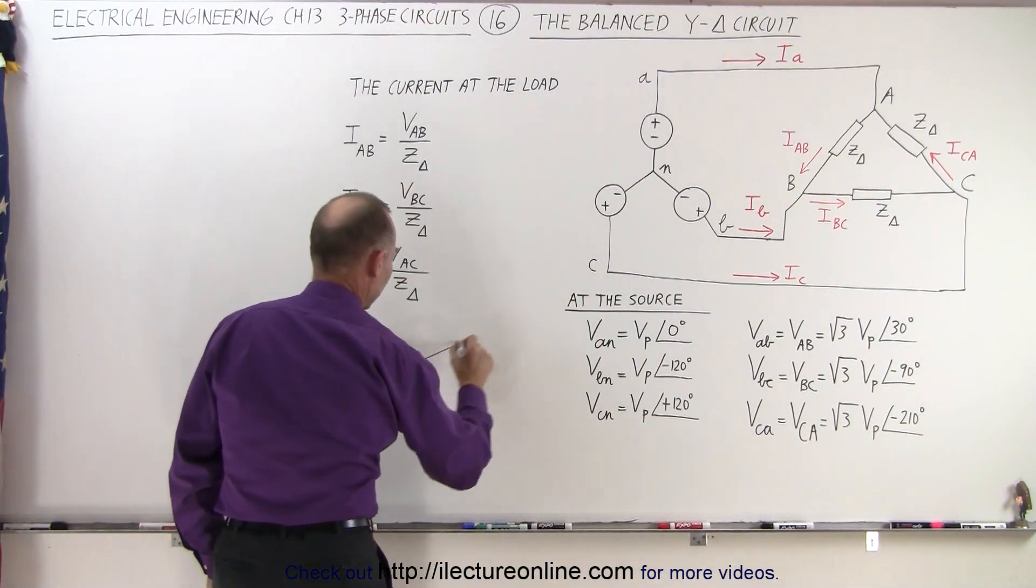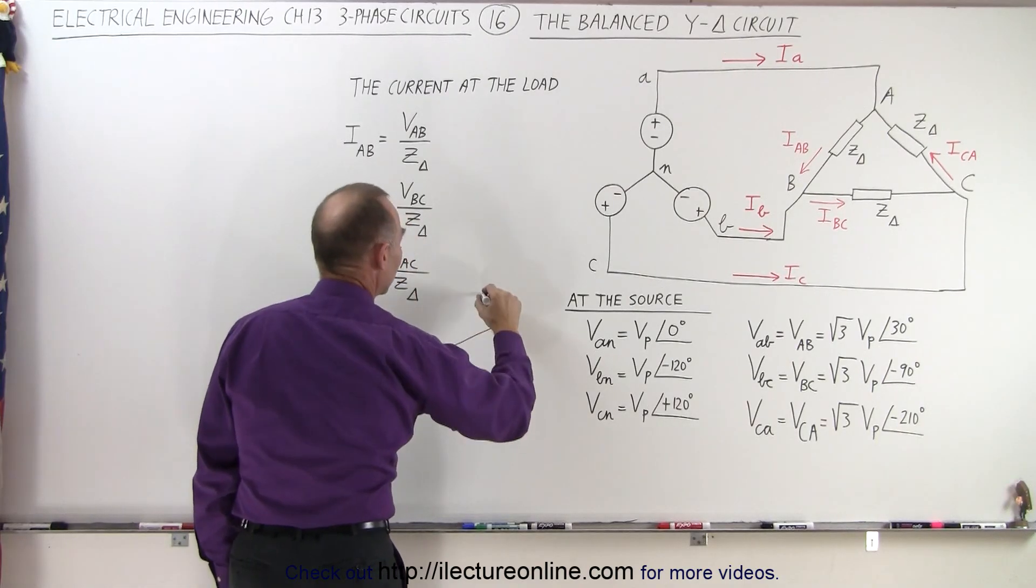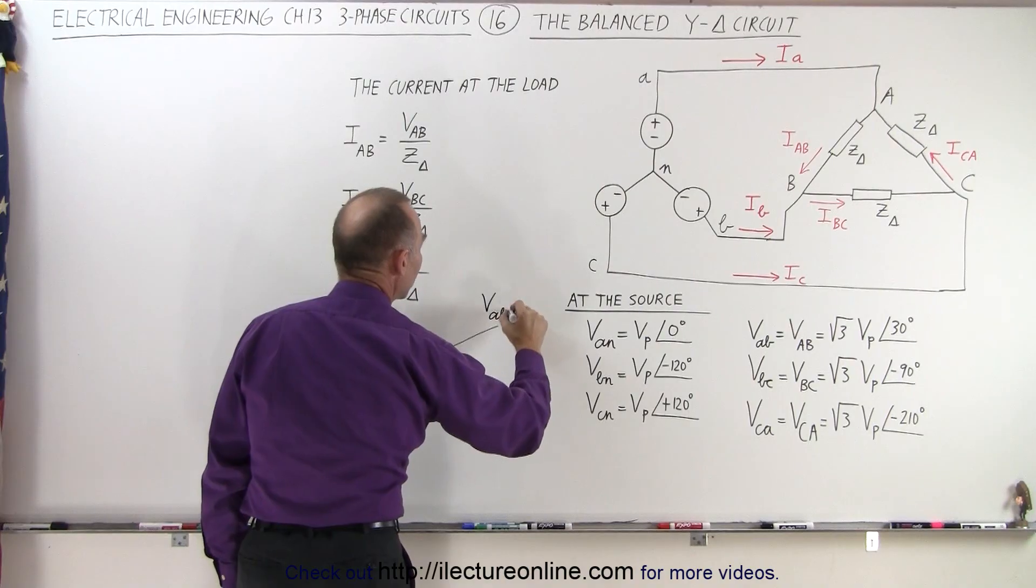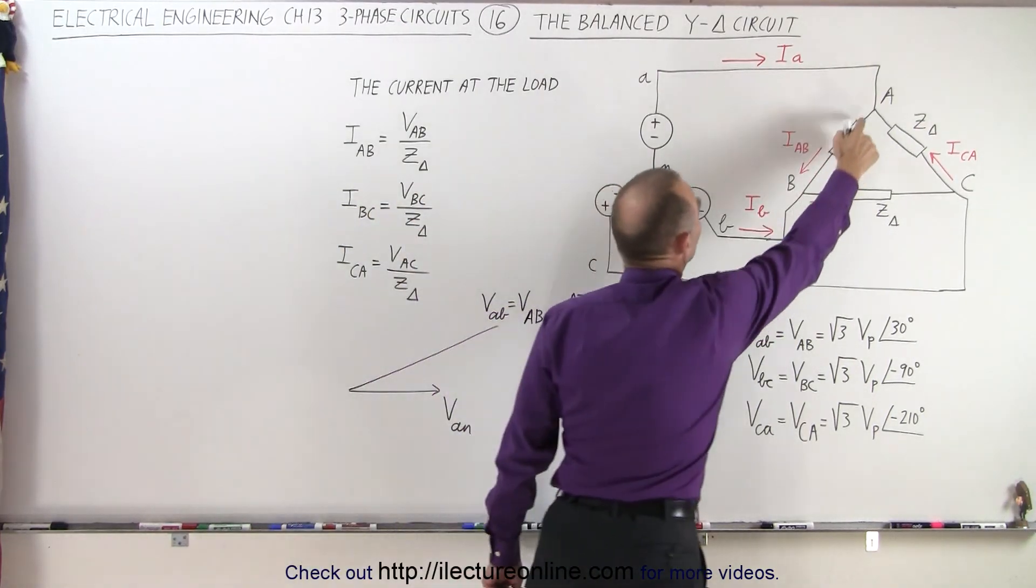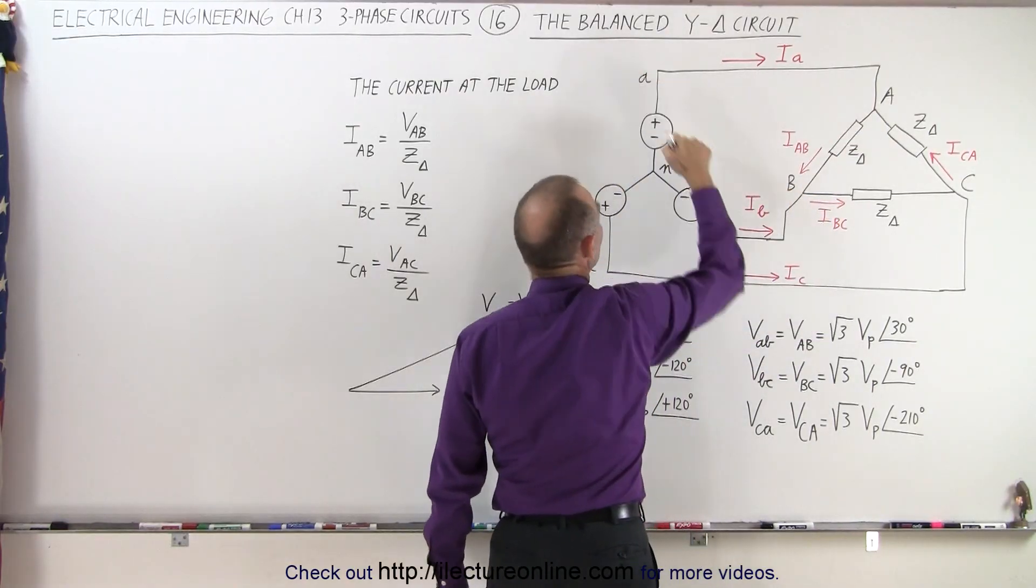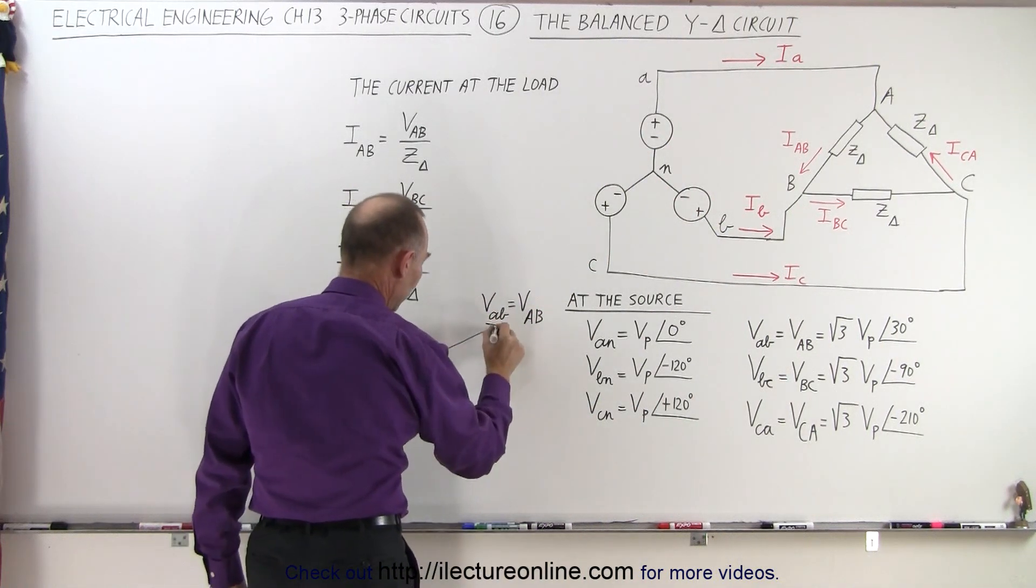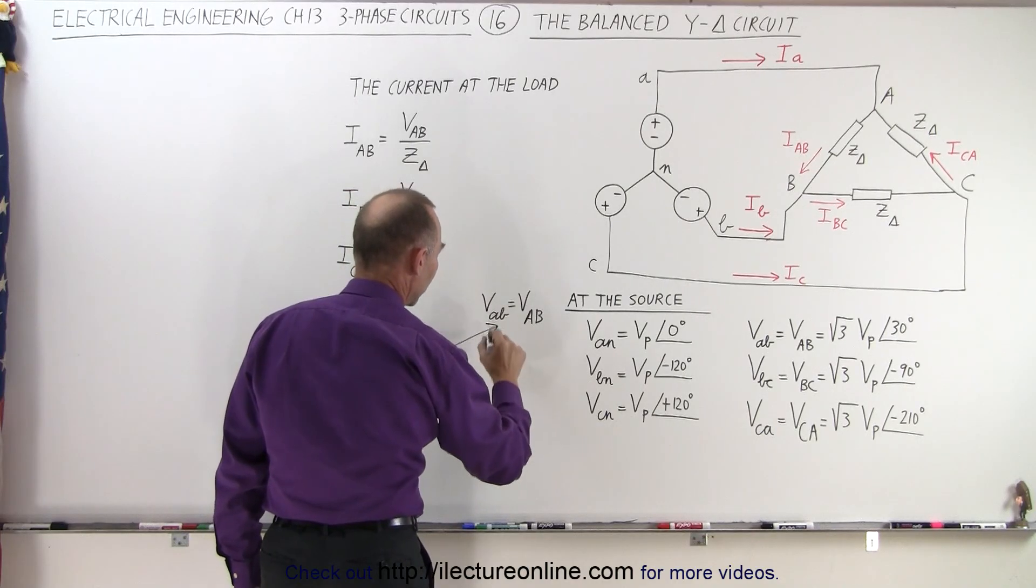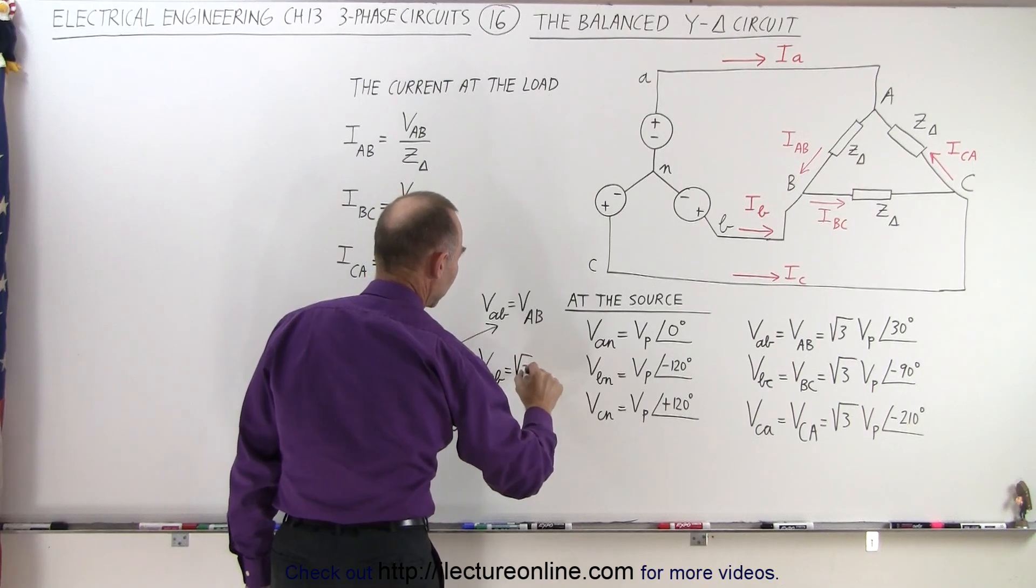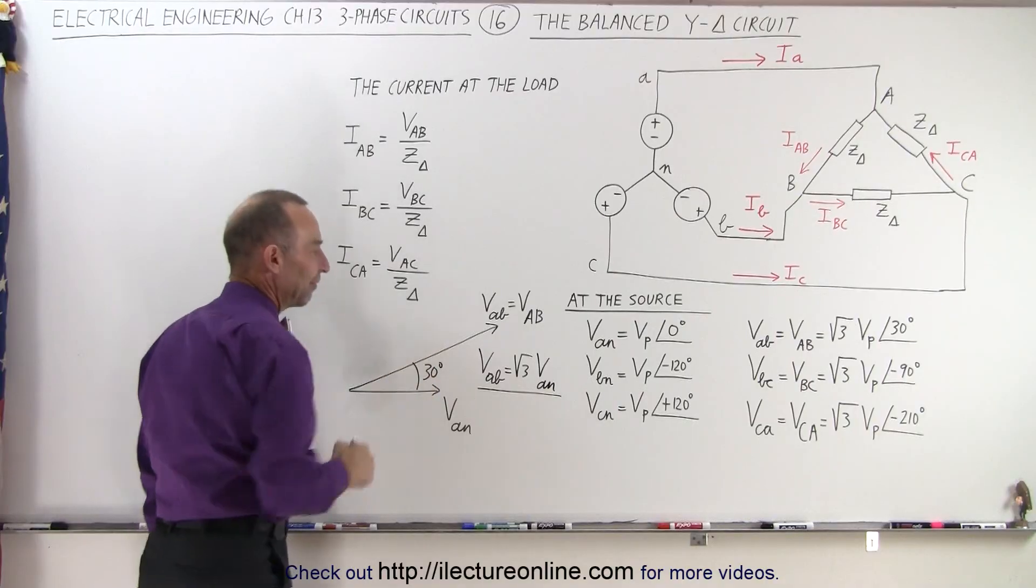In other words, if this is the phase voltage from A to N, and this is the line voltage from A to B (A to B is across the load, A to B here is across the two phases of the source), we have a lead angle of 30 degrees. Notice that the magnitude of VAB equals √3 times the magnitude of VAN. That's the magnitude difference, and we also have a phase angle difference.